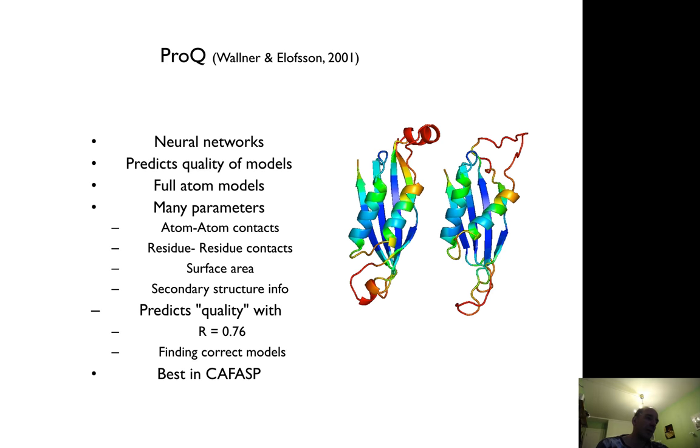So you get something like this, where you can actually identify, as you see the models to the right, blue and green areas that are good, and the red areas that are bad. So you can see, of course, that it corresponds very much to the loops of the models. We know that loops are bad in the models, and that is well predicted.